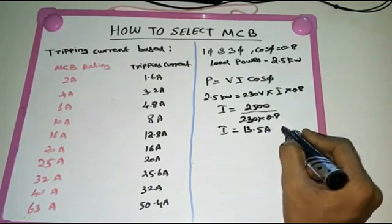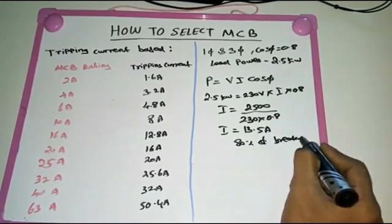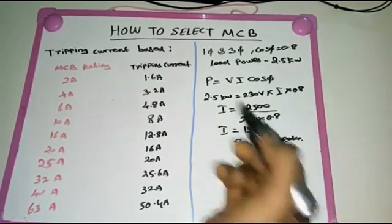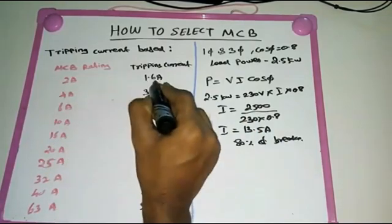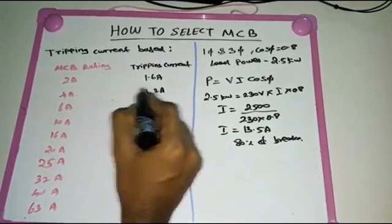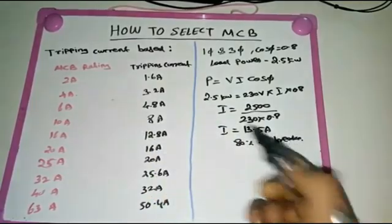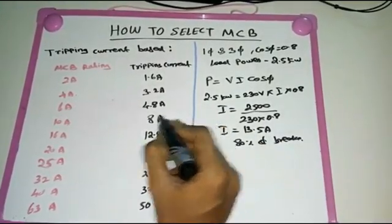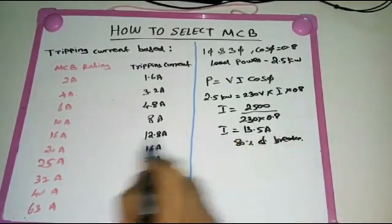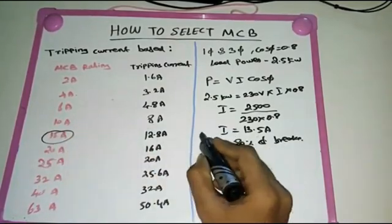We select 16 ampere because the MCB performs best when operating at 80% of its tripping current. For example: 2A MCB handles 1.6A load; 4A handles 3.2A; 6A handles 4.8A; 10A handles 8A. Since our load current is 13.5 ampere, we select a 16 ampere single pole (SP) breaker.